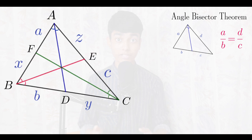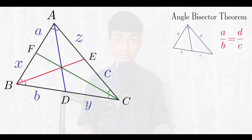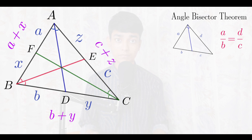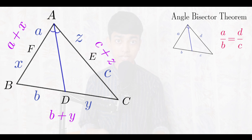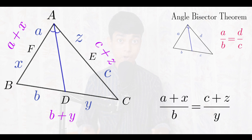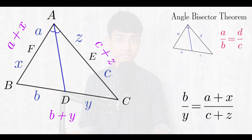Now let us move on to the actual solution. We have triangle ABC where segments AD, BE, and CF are angle bisectors for angles A, B, and C respectively, with the lengths labeled as a, b, c and x, y, z. The total length of AB becomes a plus x, BC becomes b plus y, and AC becomes c plus z. Removing BE and CF, we see triangle ABC with AD as the angle bisector. Applying the angle bisector theorem gives us (a + x) over b equals (c + z) over y. After cross multiplication this gives c over z equals (b + y) over (a + x) over (c + z). Keep this as equation 1. Now bringing back BE and removing AD, with BE as the angle bisector for B, applying the theorem gives (b + y) over c equals (a + x) over z. After cross multiplication: c over z equals (b + y) over (a + x). Keep this as equation 2.